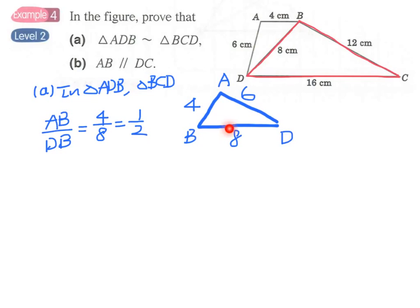And then BD over DC, 8 over 16, again 1 over 2. Finally AD over BC. We have 6 over 12. Again we have 1 over 2.